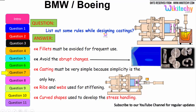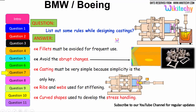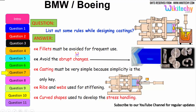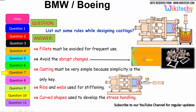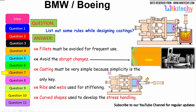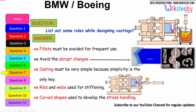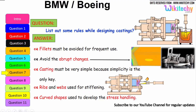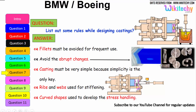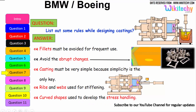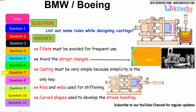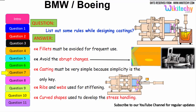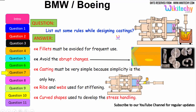Rules to follow while designing castings: fillets must be avoided for frequent use; avoid abrupt changes in section; castings must be kept simple — simplicity is the key; ribs and webs are used for stiffening; and curved shapes should be used to handle stress distribution effectively. These are the main rules to follow for castings.